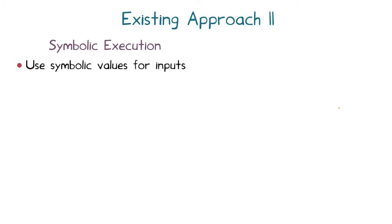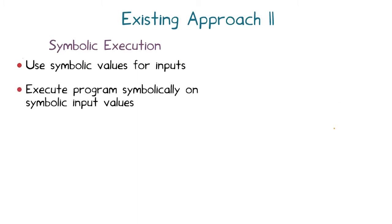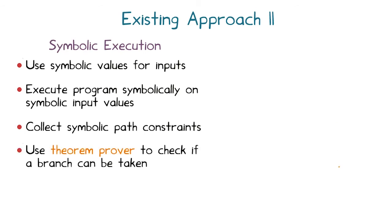Another approach that has existed since the 1970s is called symbolic execution. Input variables are represented symbolically instead of by concrete values. The program is executed symbolically and symbolic path constraints are collected as the program runs. At each branch point, we invoke a theorem prover to determine whether a branch can be taken. If so, we take the branch; otherwise we ignore it as dead code.